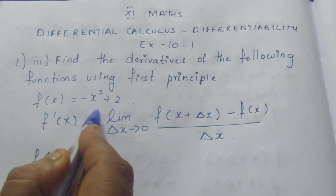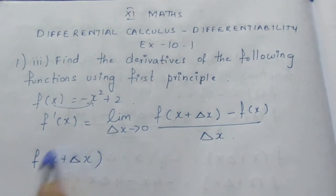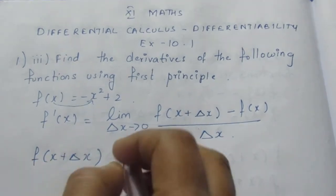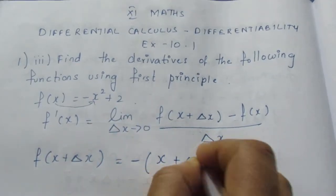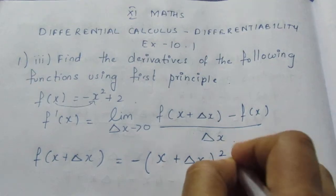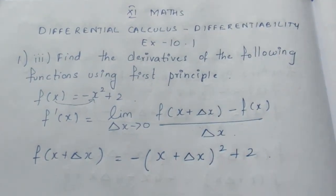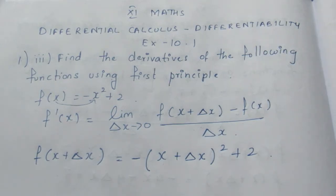We know F of x is equal to minus x square plus 2. Where there is x in the bracket, we can substitute. Minus of x, we can substitute minus x square.